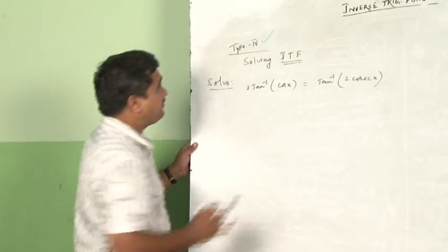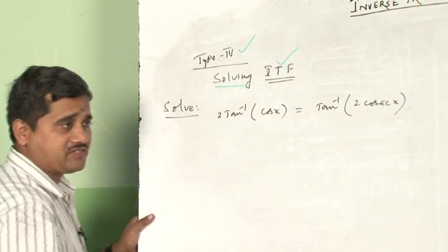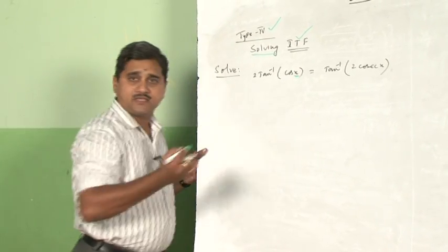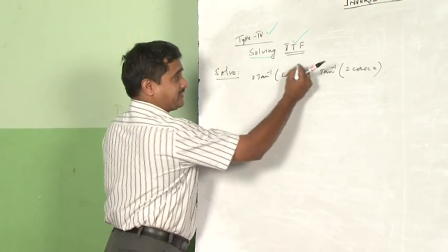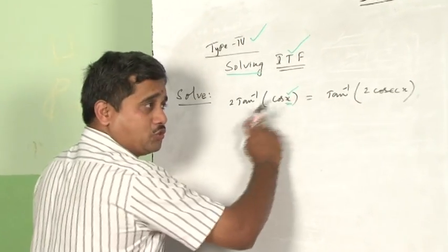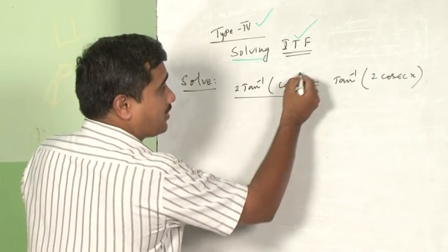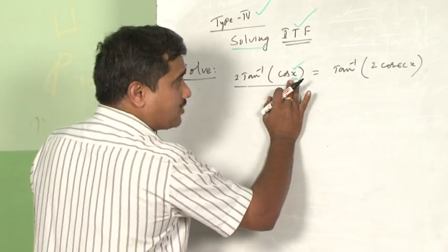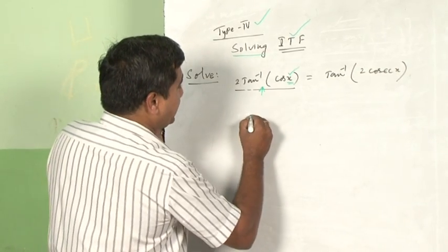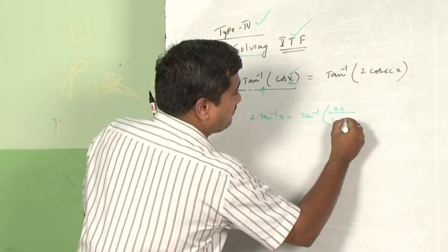We come to Type 4 — solving inverse trigonometric functions, meaning finding the value of x. The equation is 2tan⁻¹(cosx) = tan⁻¹(2cosecx). Instead of keeping 2tan⁻¹(cosx) as is, I convert it using the formula 2tan⁻¹(x) = tan⁻¹(2x/(1 − x²)). This gives tan⁻¹(2cosx/(1 − cos²x)) on the left-hand side.